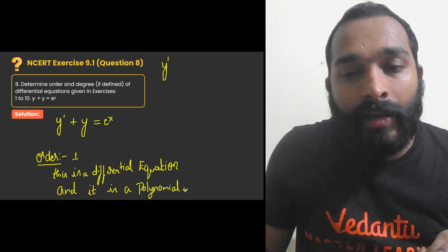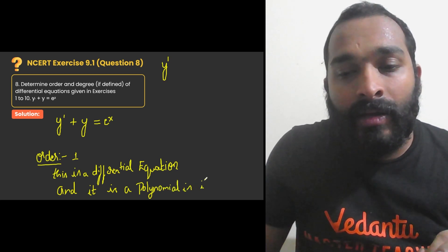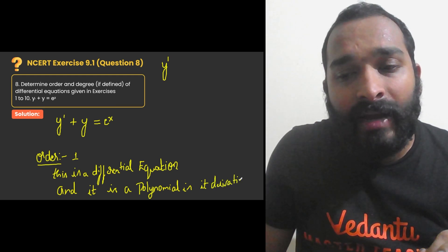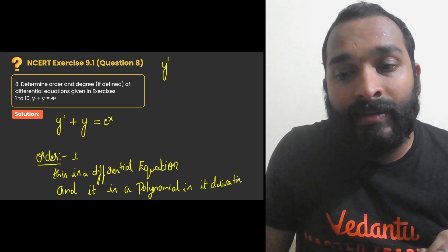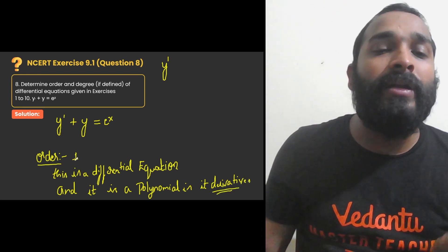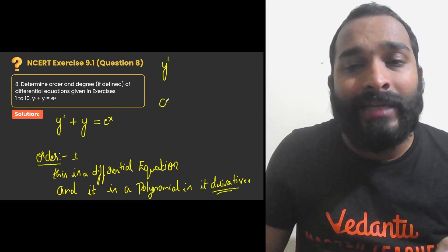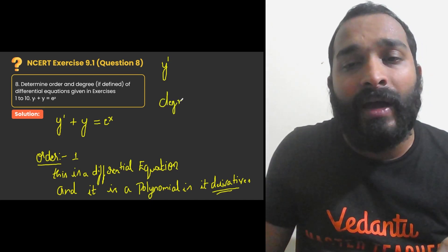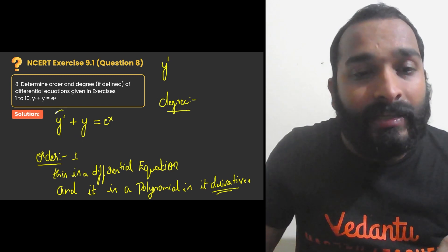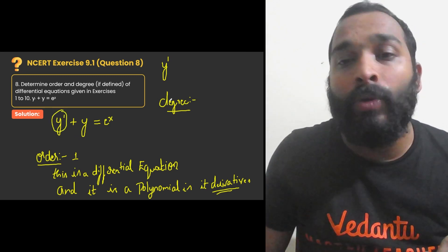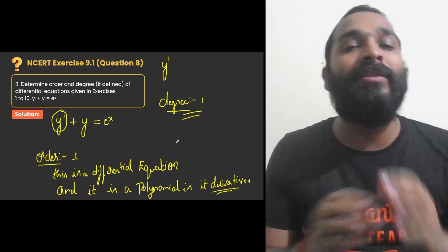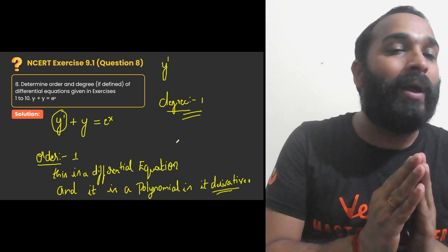This differential equation is a polynomial in its derivatives. So its degree is defined. Whenever it is a polynomial function in its derivatives, its degree is defined. What is the degree? Power of the highest derivative. The highest derivative is y dash, and its power is 1. So degree is 1, order is 1. Degree is 1, order is 1.